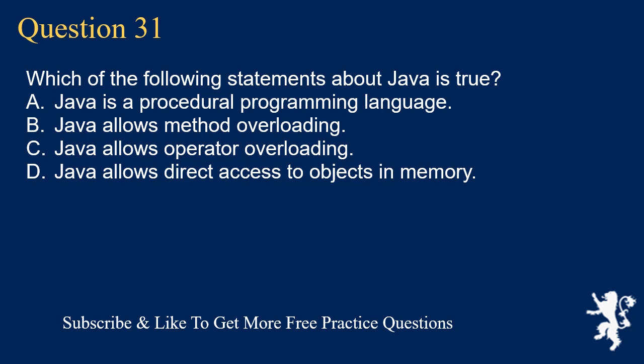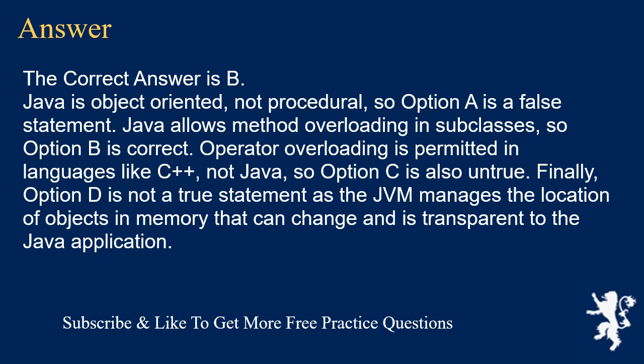Question 31: Which of the following statements about Java is true? A) Java is a procedural programming language. B) Java allows method overloading. C) Java allows operator overloading. D) Java allows direct access to objects in memory. The correct answer is B. Java is object-oriented, not procedural, so option A is false. Java allows method overloading in subclasses, so option B is correct. Operator overloading is permitted in languages like C++, not Java, so option C is untrue. Option D is false as the JVM manages the location of objects in memory, transparent to the application.